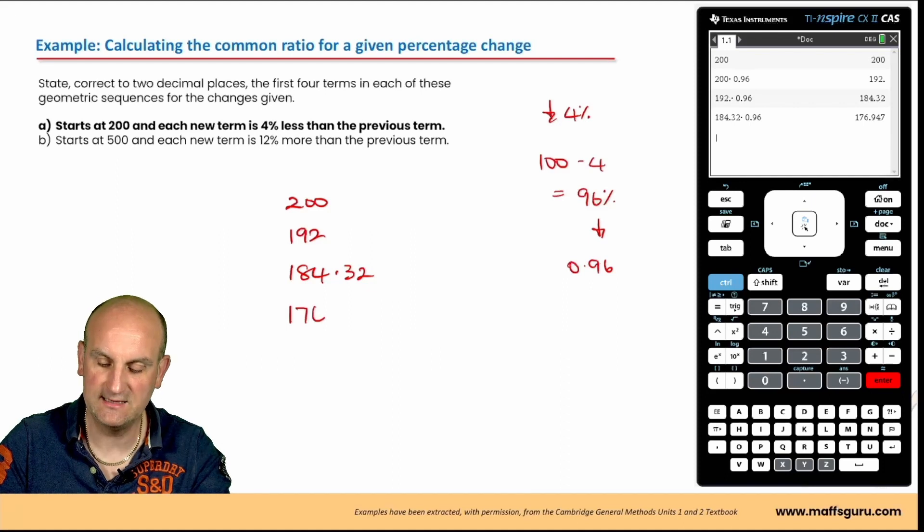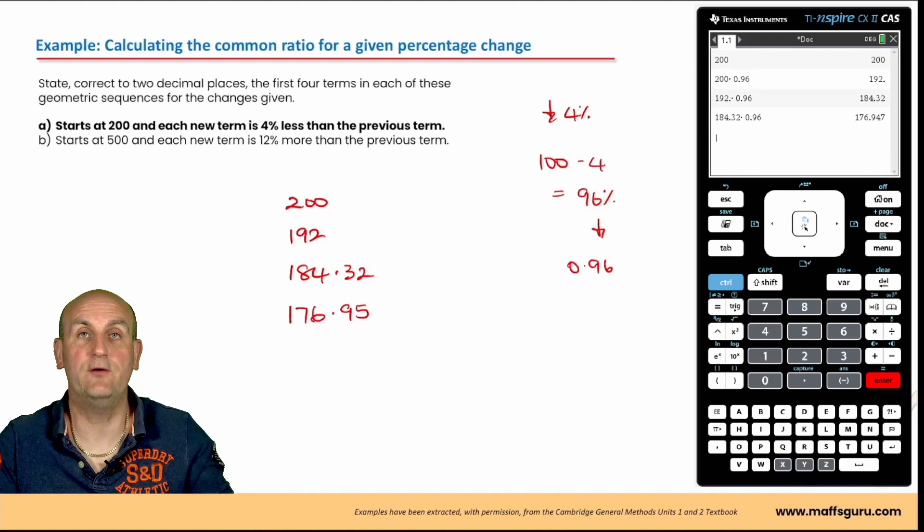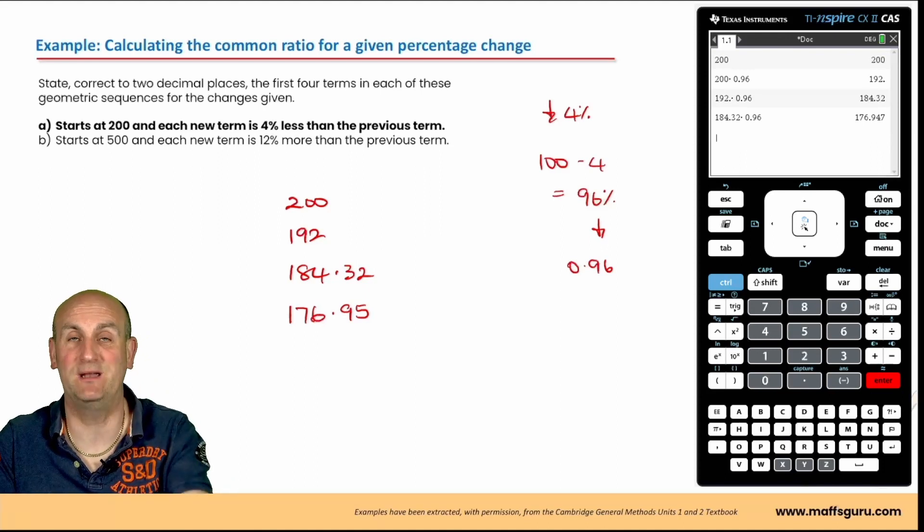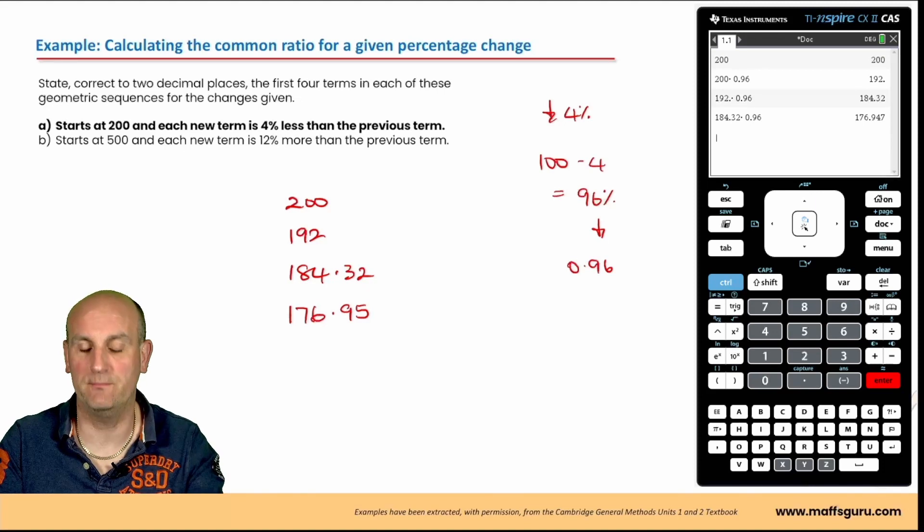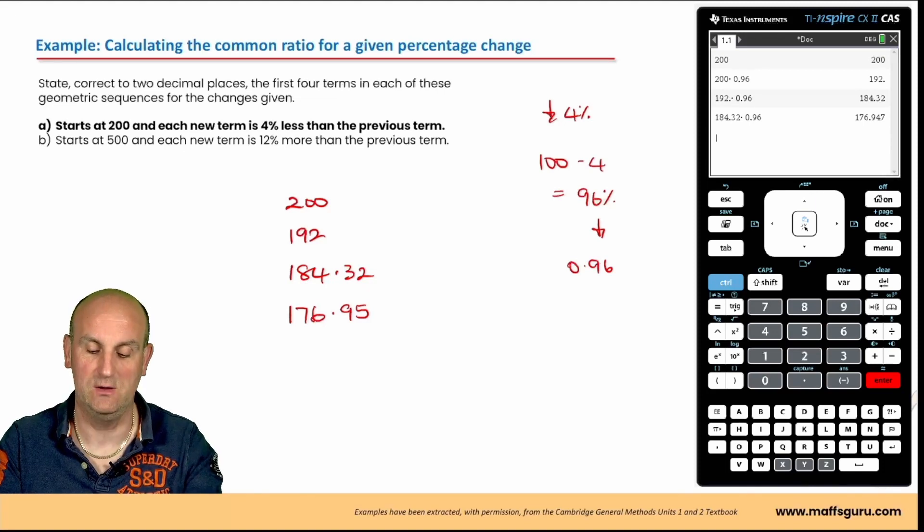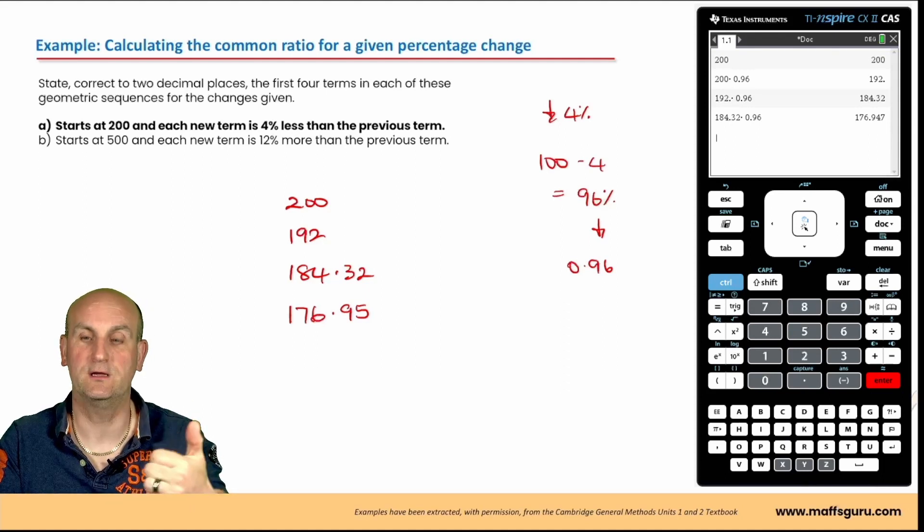Now, if you don't know how to round to decimal places, please learn. It's hugely important because people lose exam marks left, right, and center with this. But there we go. Starts at 200. Each new term is 4% less than the previous term, and write the first four terms. Ka-ching.